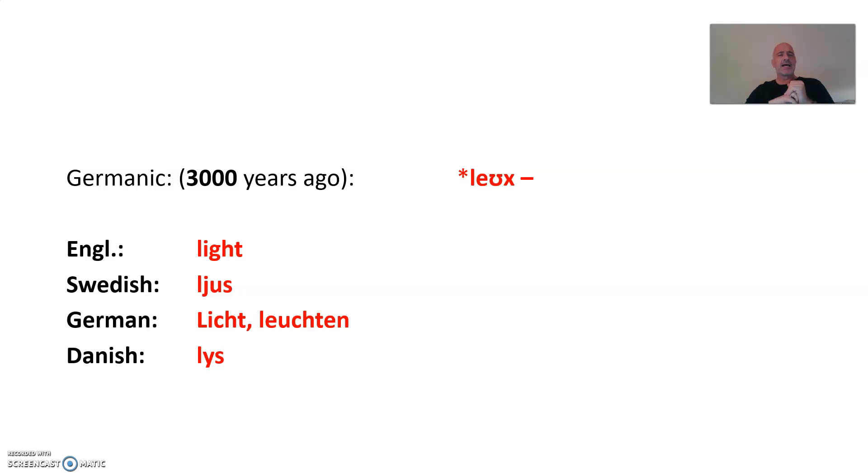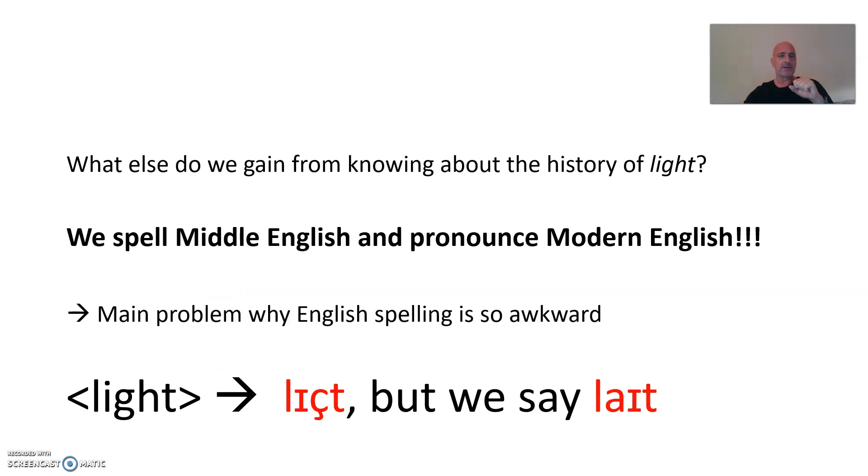Germanic, let's go back to that, 3,000 years ago leuht, you remember, this is the stem which gives you English light, Swedish ljus, I don't know exactly how it's pronounced, German licht, leuchten, Danish ljus, and so on. And you see the correspondences here, all deriving from the same Indo-European root if you like.